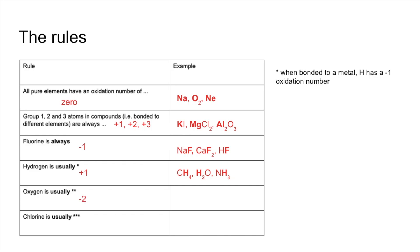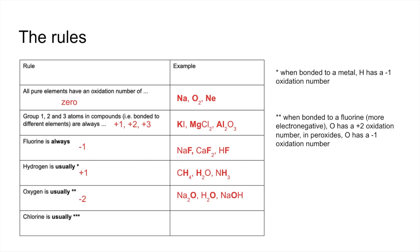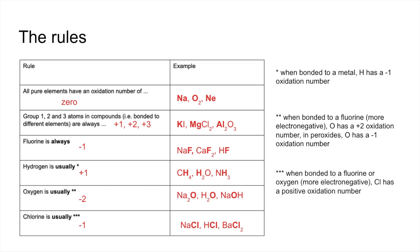Oxygen is usually negative two, with examples of oxygen having a negative two oxidation number. However, when bonded to fluorine — which is more electronegative than oxygen — oxygen has a plus two oxidation number. In peroxides, such as hydrogen peroxide H₂O₂, oxygen has a negative one oxidation number. Finally, chlorine is usually negative one, but when bonded to fluorine or oxygen — both more electronegative than chlorine — chlorine must have a positive oxidation number.